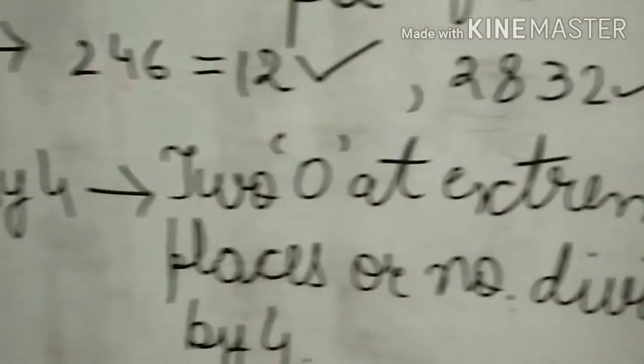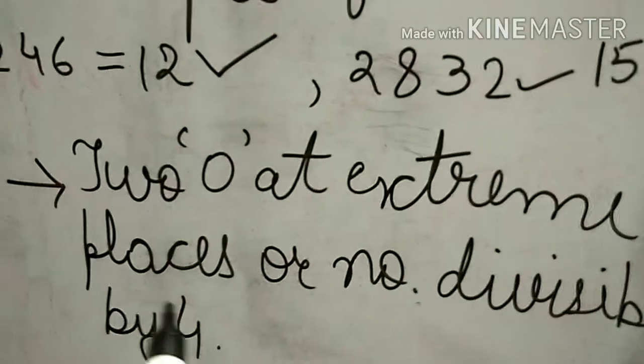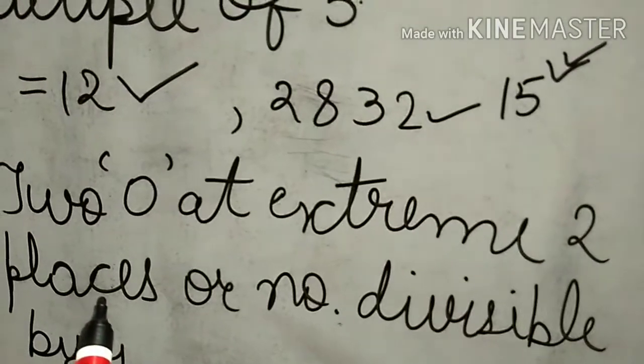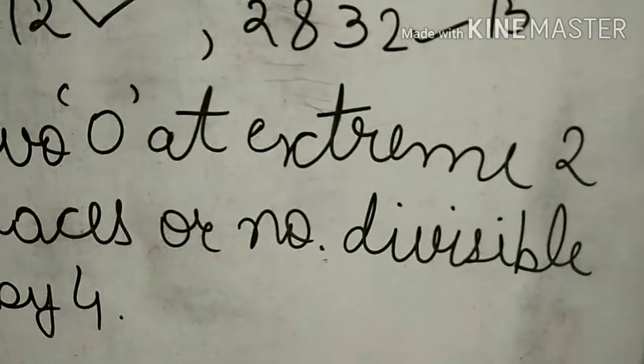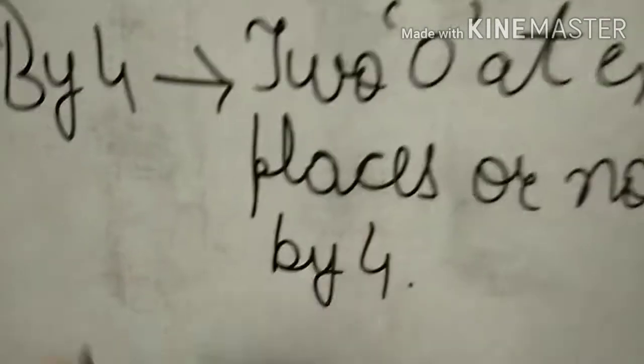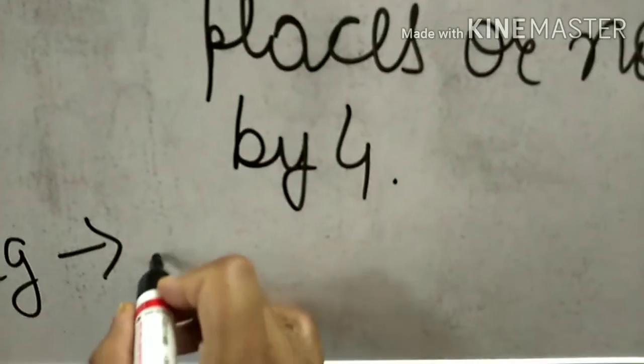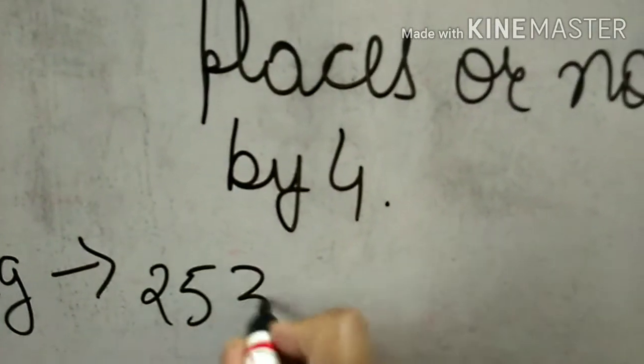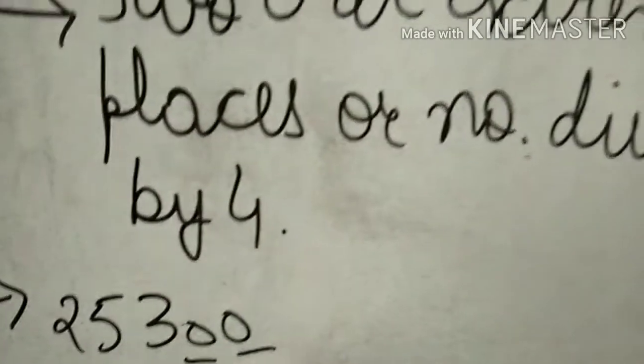Divisibility by 4: two zeros at extreme right places, or the last two digits form a number divisible by four. We are talking about one's and ten's place. If a number has two zeros at the extreme right, it is divisible by four.